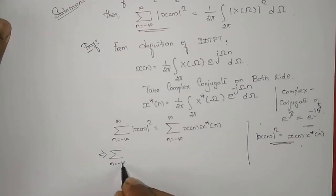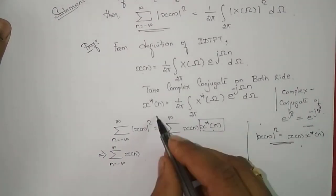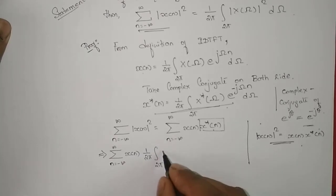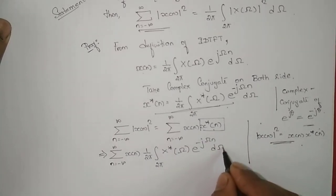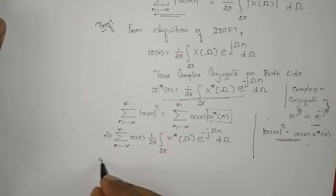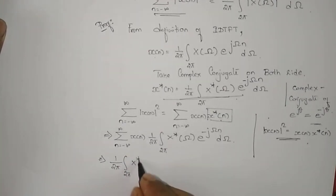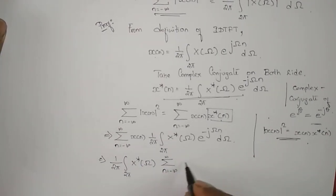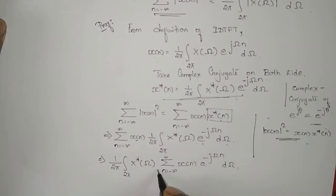Next, for the summation from n equals minus infinity to infinity of x(n), instead of writing x*(n) I will substitute the expression derived earlier. So we get 1 over 2π, integrating over 2π, of X*(ω) e^(−jωn) dω. This becomes 1 over 2π, integrating over 2π, of X*(ω) times the summation from n equals minus infinity to infinity of x(n) e^(−jωn) dω.